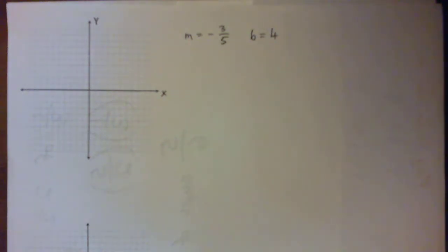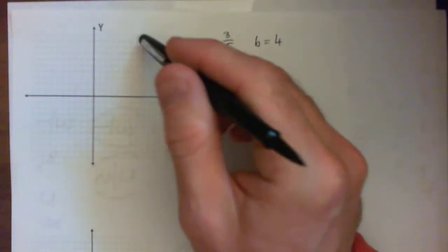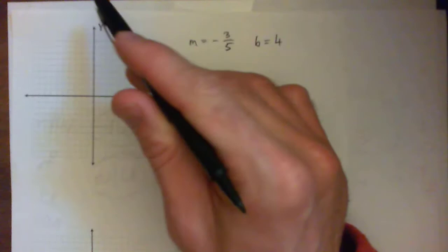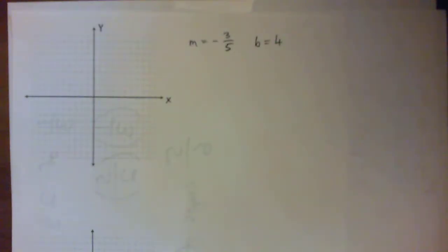We're given m = -3/5 and b = 4, and need to graph the line. There are two ways of doing it: you could get the y-intercept and do rise over run, or make a table. I'm going to do both ways - first making an equation and table to plot points, then demonstrating rise over run at the end.